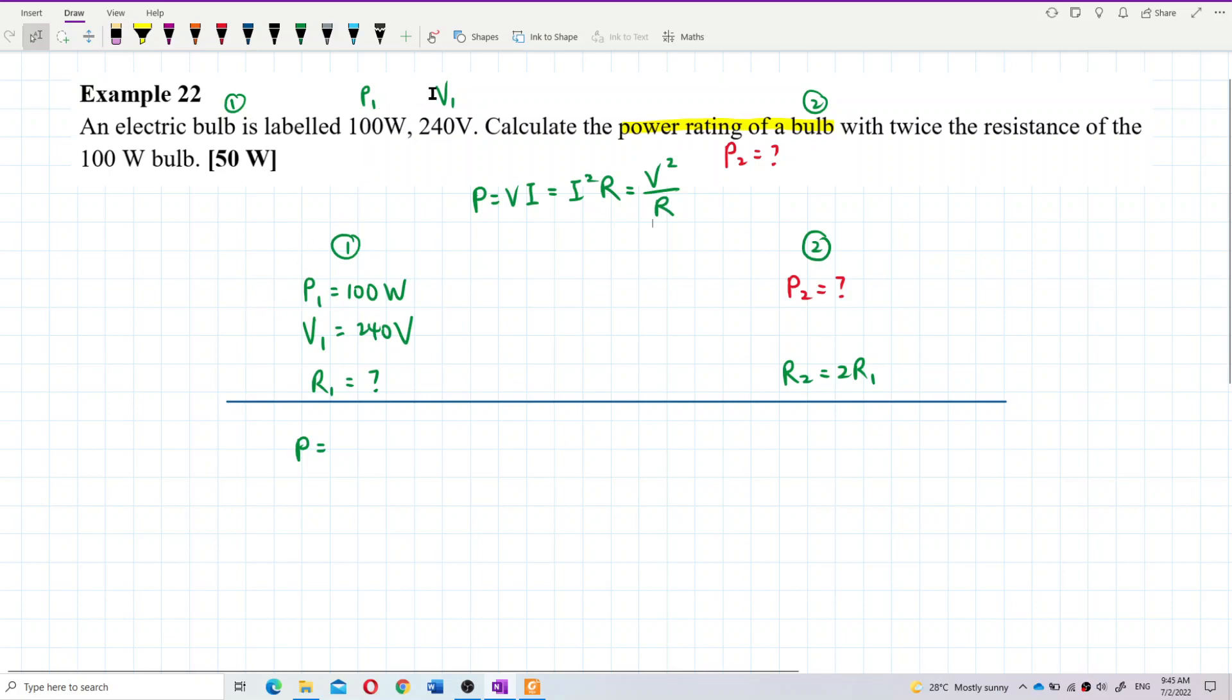Right now is between voltage and resistance, so we use V square over R. Because this one is about voltage and resistance. So P1 = V1² / R1. Substitute the value. V1 is 240 volts squared. So what is resistance 1? Let's calculate.